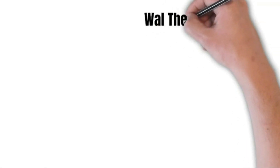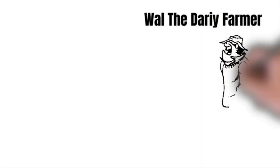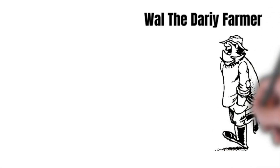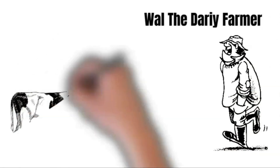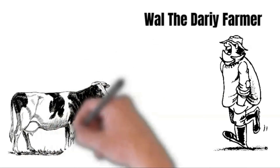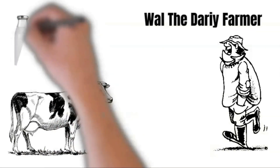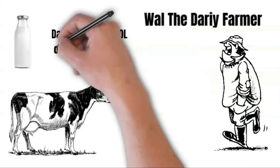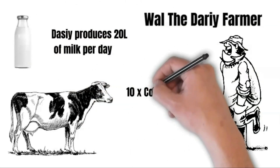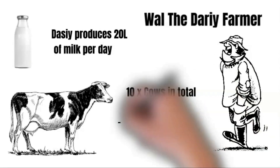Let's kick it off with Walt the dairy farmer. He's a classic old farmer, hard-working bloke, doesn't mind getting stuck into a hard day's work on the farm. Old Walt only has a small hobby farm — in total he only has 10 milking cows, and each one of these old daisies produces 20 litres of milk per day. So that's 10 cows times 20 litres, giving him 200 litres of milk per day.